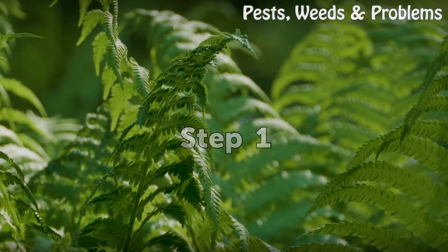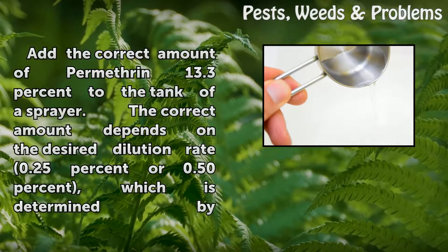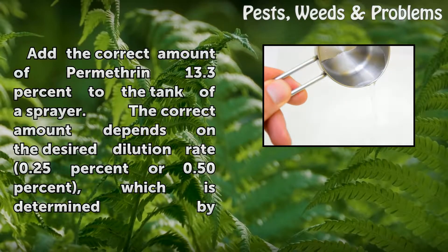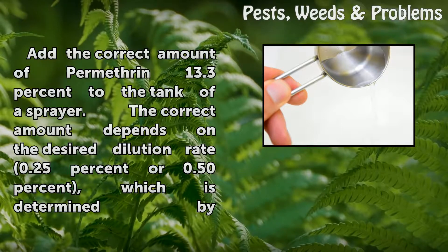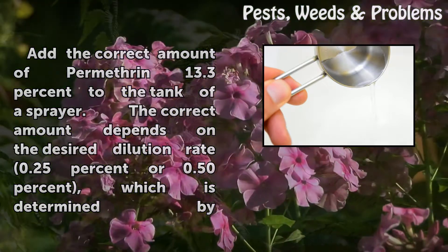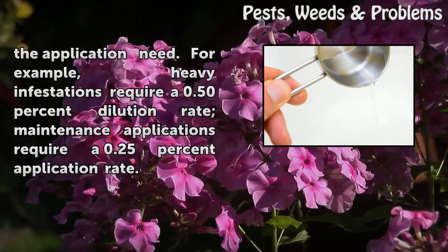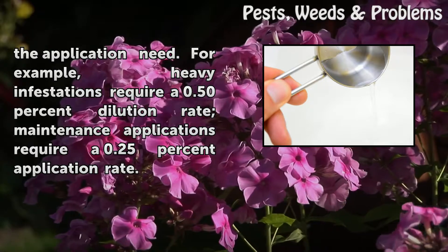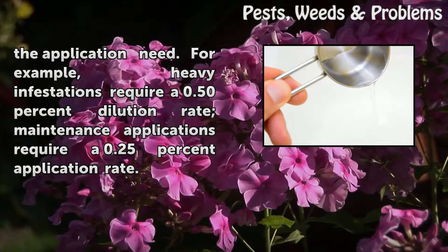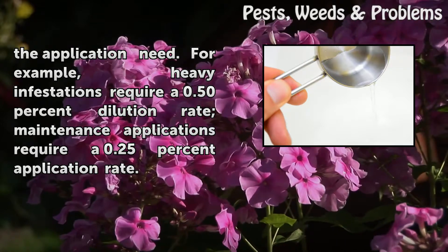Step 1: Add the correct amount of Permethrin 13.3% to the tank of a sprayer. The correct amount depends on the desired dilution rate — 0.25% or 0.50% — which is determined by the application need. For example, heavy infestations require a 0.50% dilution rate; maintenance applications require a 0.25% dilution rate.